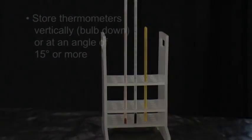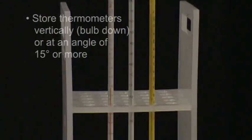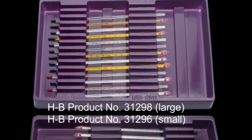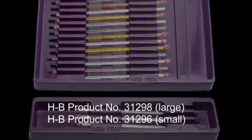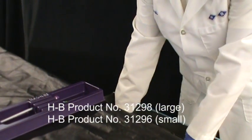To prevent separation in storage, we recommend you store your thermometers vertically or at an angle of 15 degrees or more. We offer storage trays that properly store your thermometers at an angle to prevent liquid separation. These trays fit into a standard lab drawer.